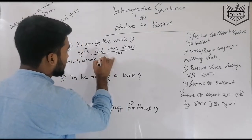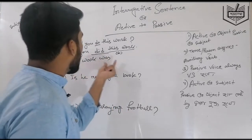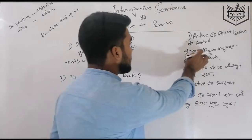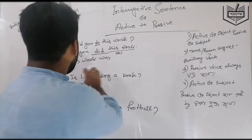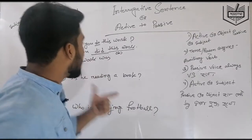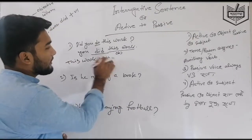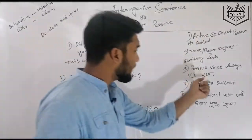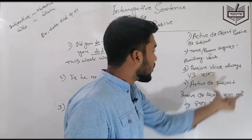So 'this work' is the passive subject. 'Was' is the auxiliary. The main verb takes the past participle form — V3. So the passive becomes: 'Was this work...?' Then 'was' or 'were' — we confirm 'was' fits here. The passive auxiliary is confirmed.